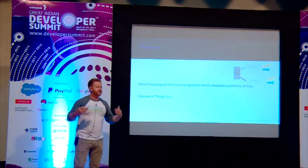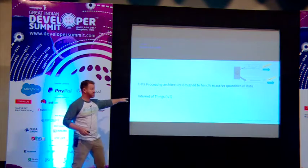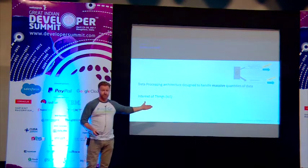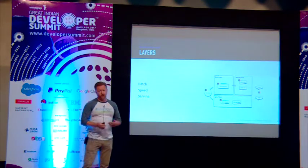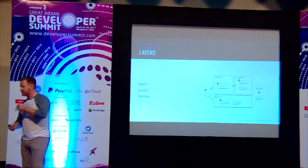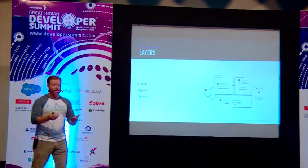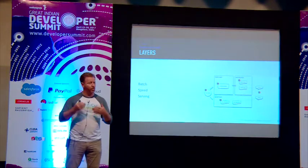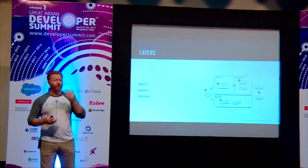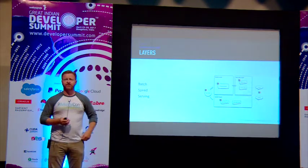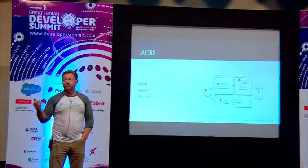Lambda architecture really is an enabler of that, and we've actually been using this style or technique for a very long time. The core of the lambda architecture is all about data — looking at data. The architecture really has three layers: the batch layer, the speed layer, and the serving layer. At some point you want to serve up an answer — a human needs to know, you need to evaluate it, see reports, things of that nature.